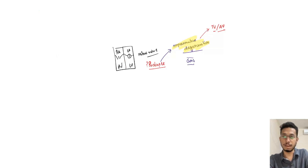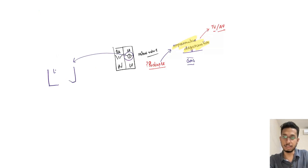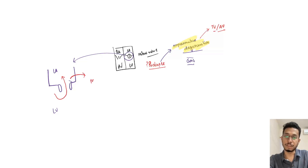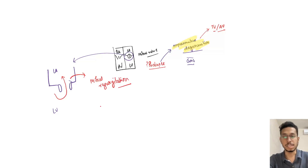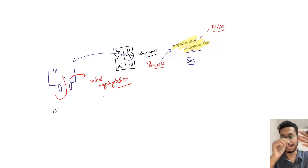If there is prolapse of the mitral valve, it will produce regurgitant flow during systole from the left ventricle to the left atrium, leading to mitral regurgitation. This is the most common pathological presentation in mitral valve prolapse. Due to this prolapse, there is elongation, redundancy, and rupture of the chordae tendineae that leads to mitral regurgitation.